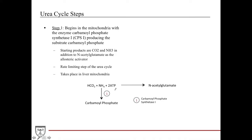Now I'm going to talk about step one of the urea cycle. It begins in the mitochondria with the enzyme CPS1. You use CO2 and the presence of NH3 as well as the allosteric activator N-acetylglutamate. You use this to produce carbamoyl phosphate in the presence of CPS1. This is really important because this is the rate-limiting step of the urea cycle.